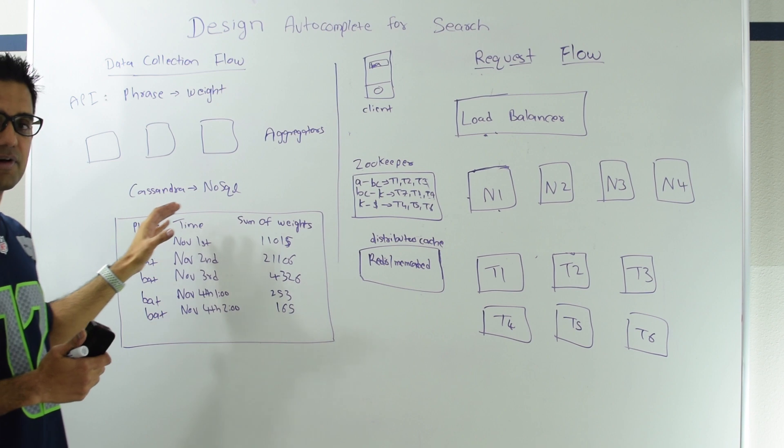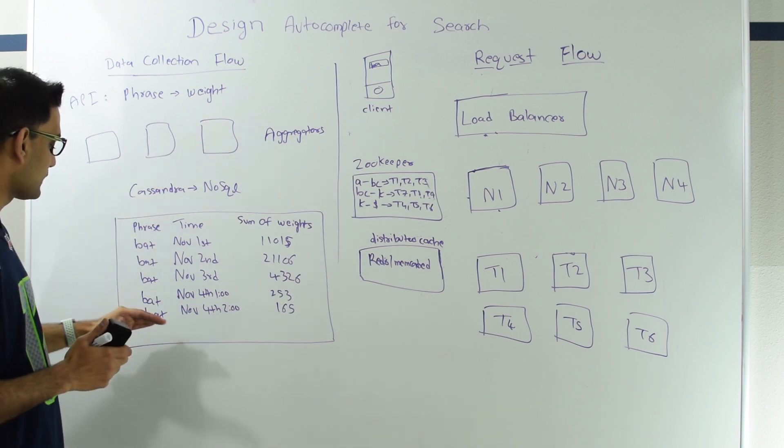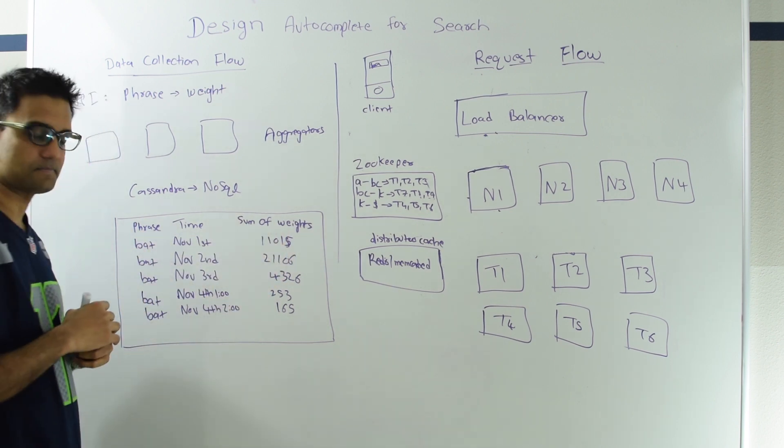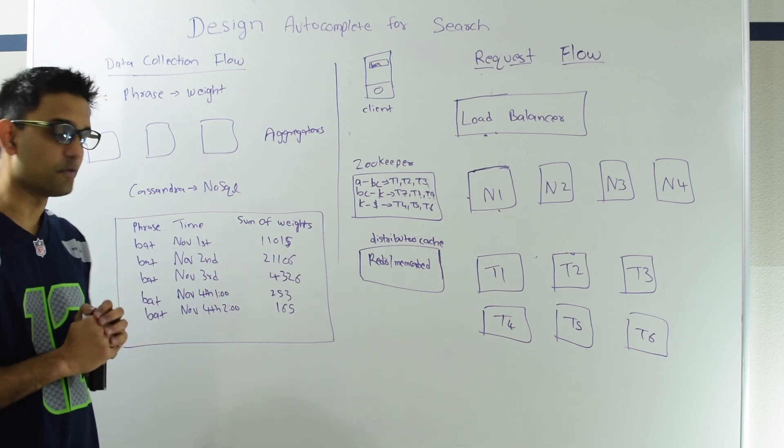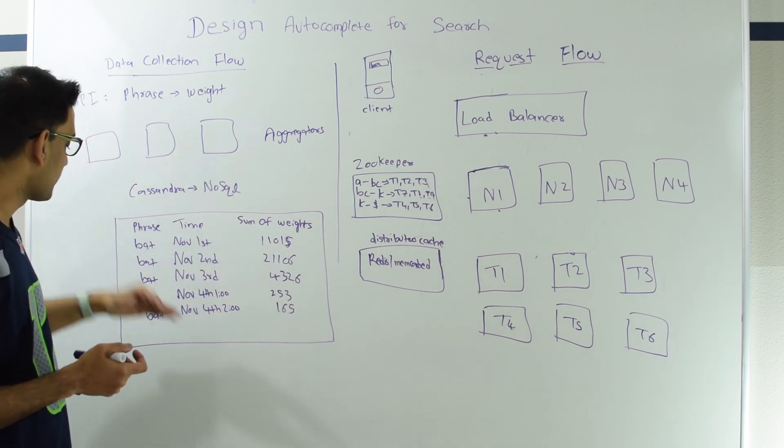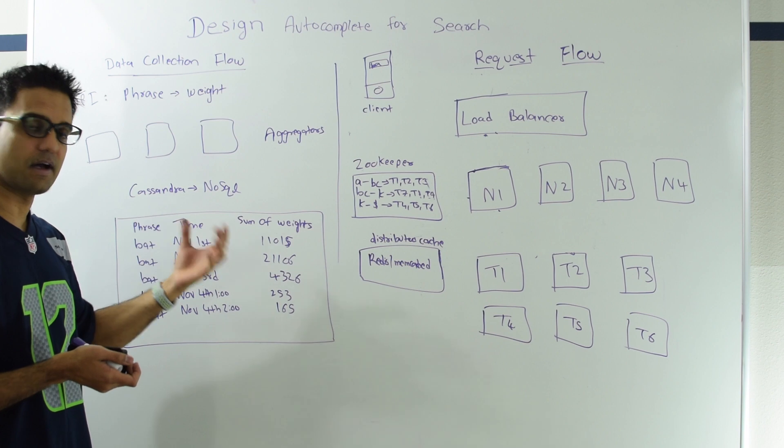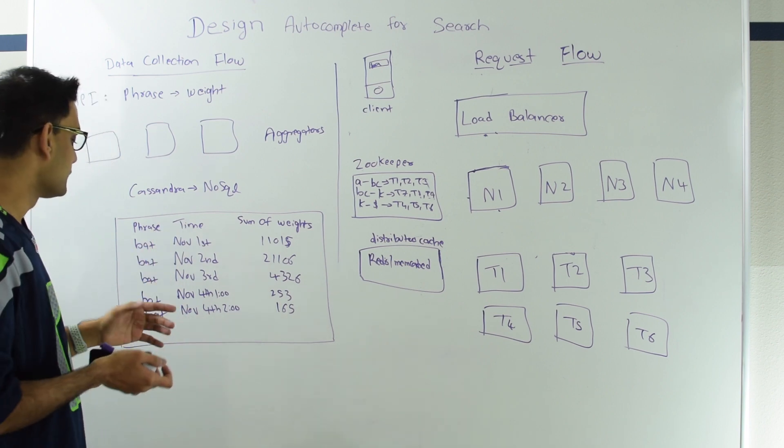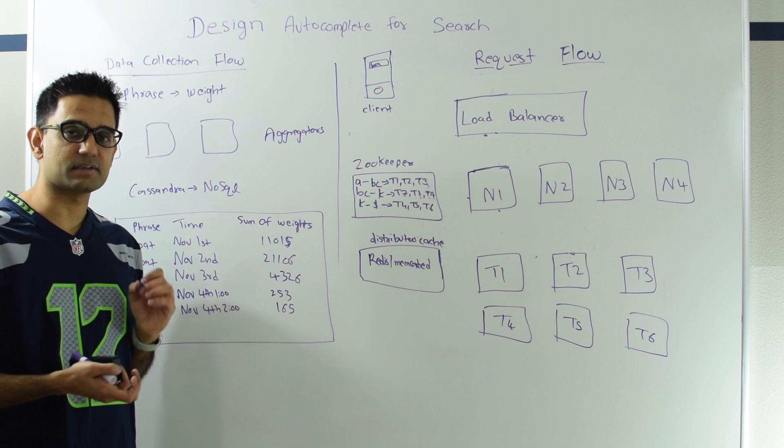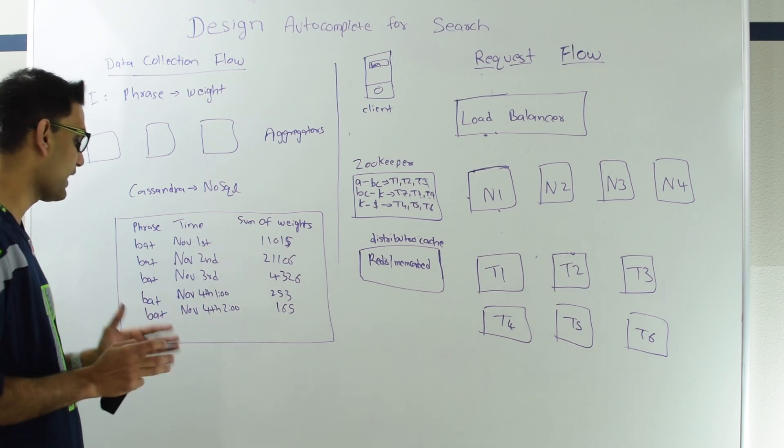The database I've used here is Cassandra, but theoretically you can use any database. Cassandra is a NoSQL database. Let's look at the schema here. Our schema is phrase, time, and sum of the weights for that time. So what we are saying is, let's suppose the time right now is 2:15 AM on November 4th. Aggregators collect the data for certain amount of time, then they flush that into Cassandra. For bat, whatever the sum of the weights is, add that to this sum of weight. Anything from 2 AM to 3 AM will go into this particular row. So our granularity is by hour. After 3 AM, we'll create a new row, and every data from 3 AM to 4 AM will go into that row.